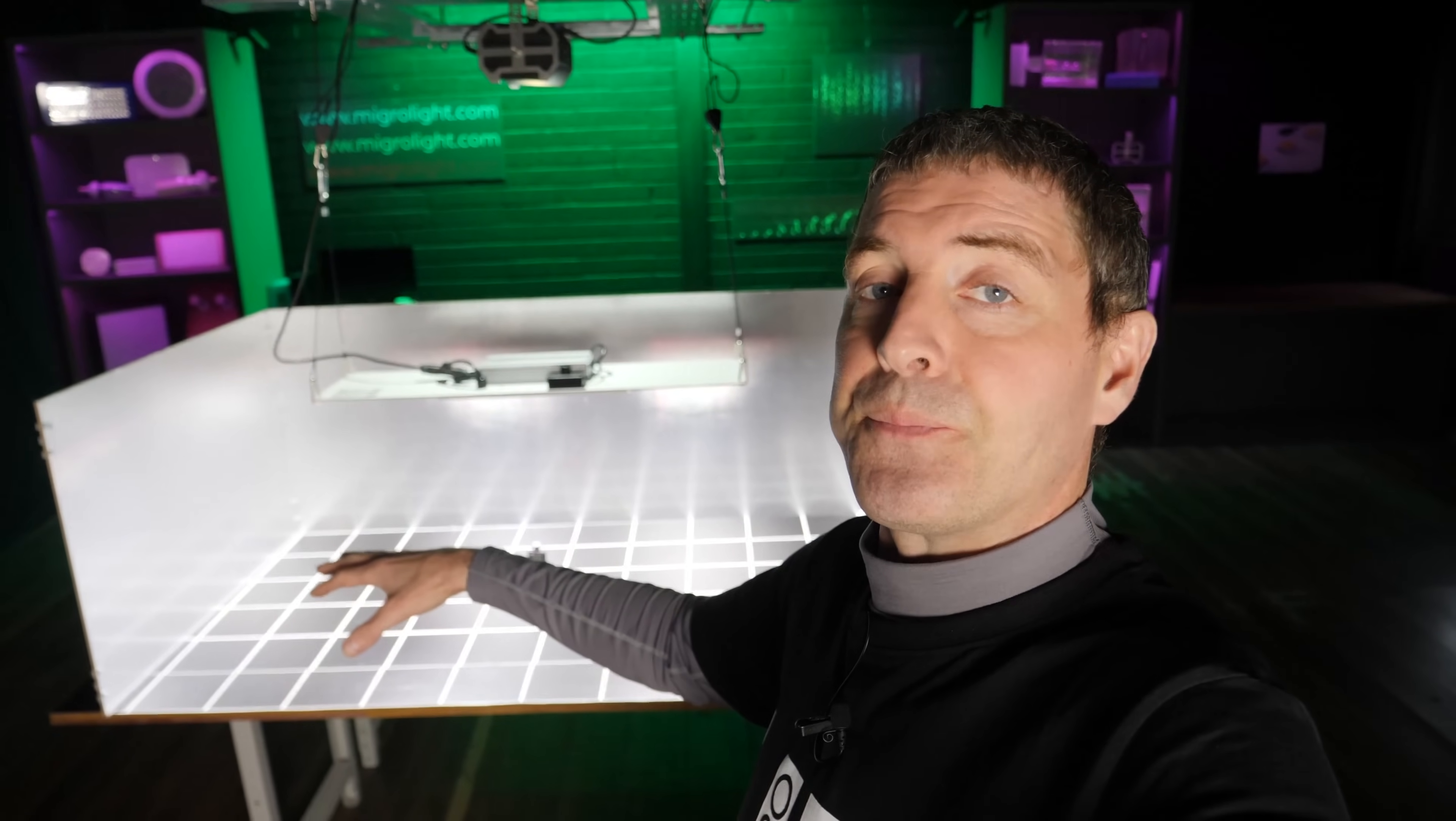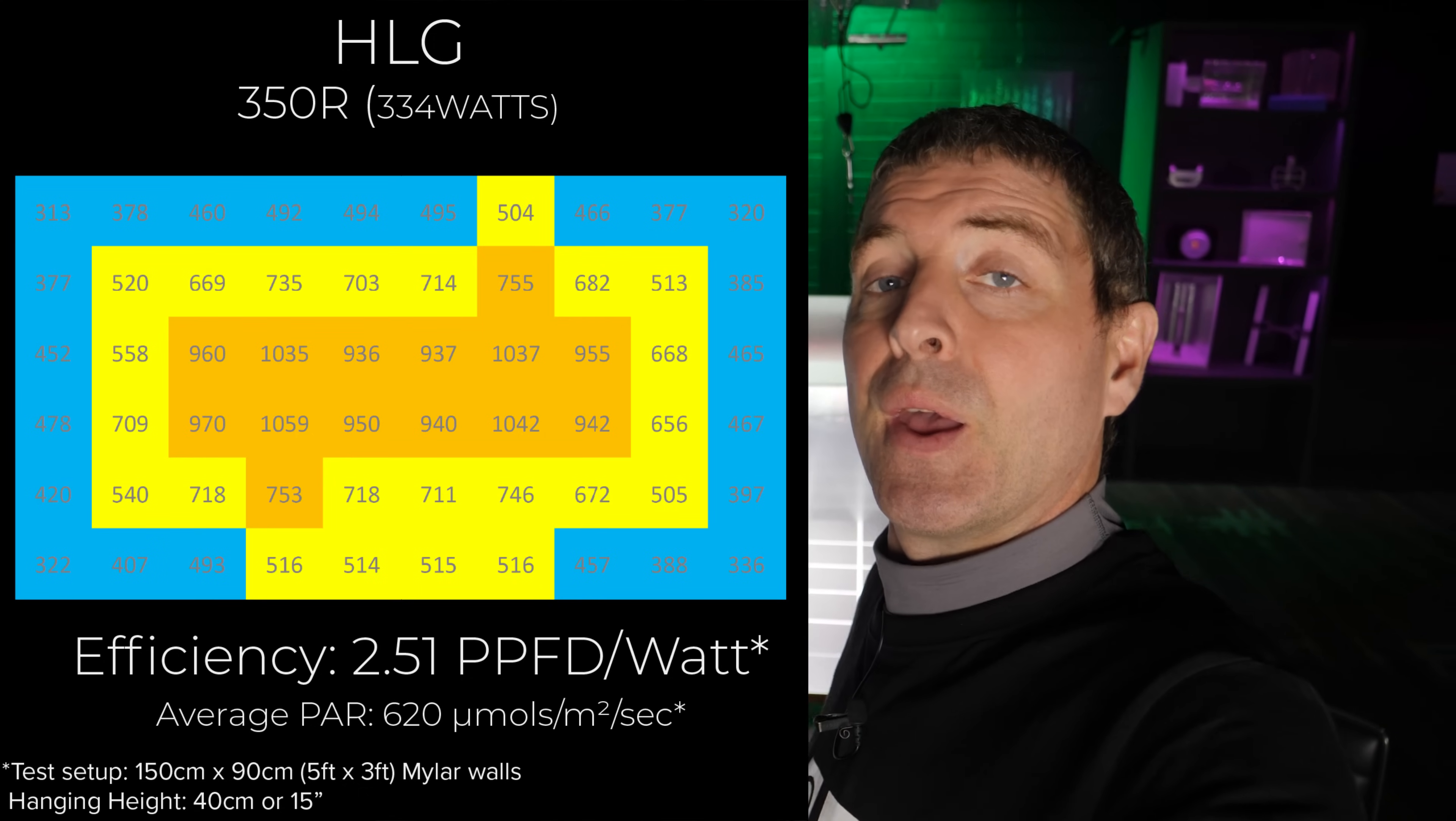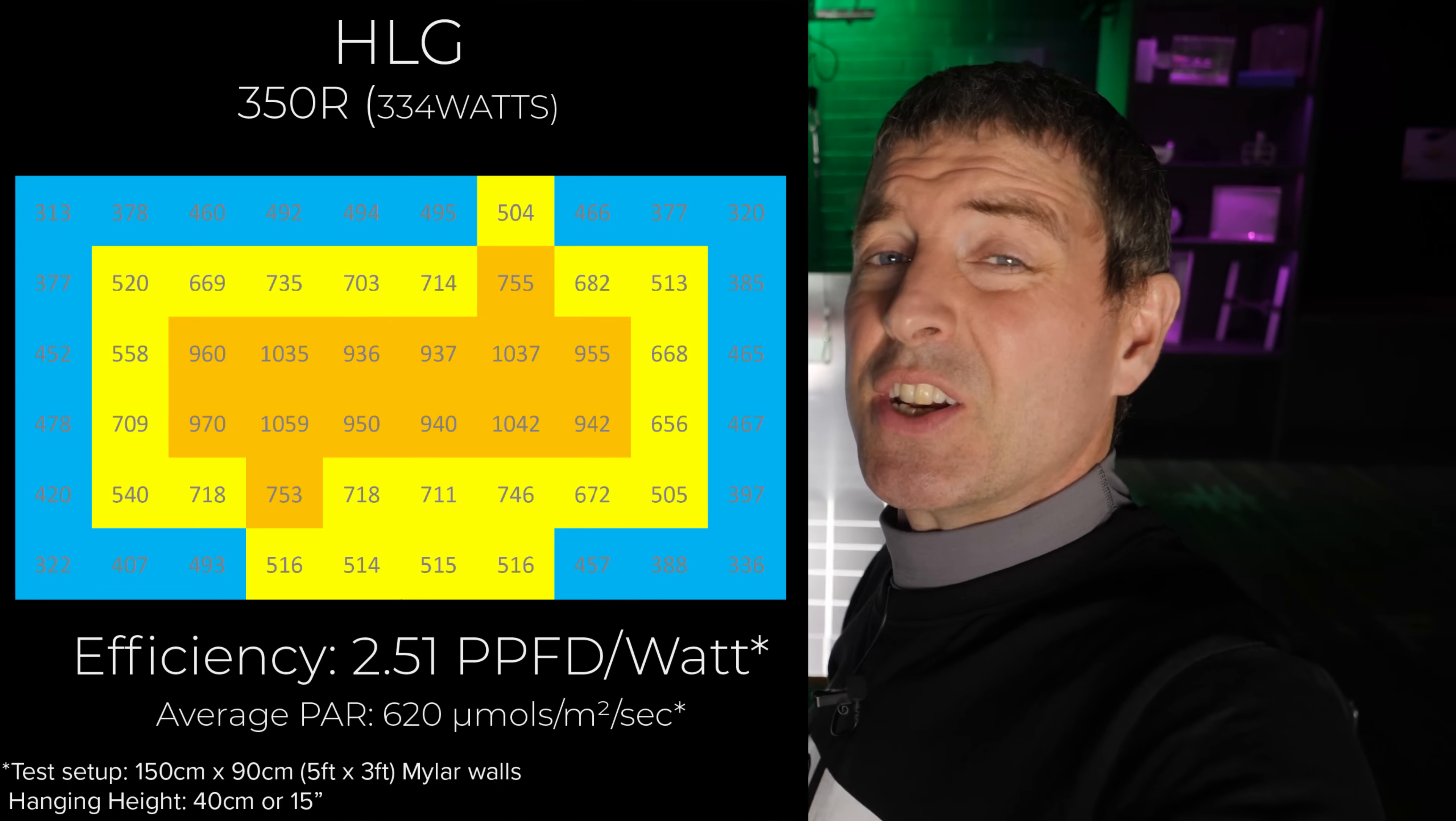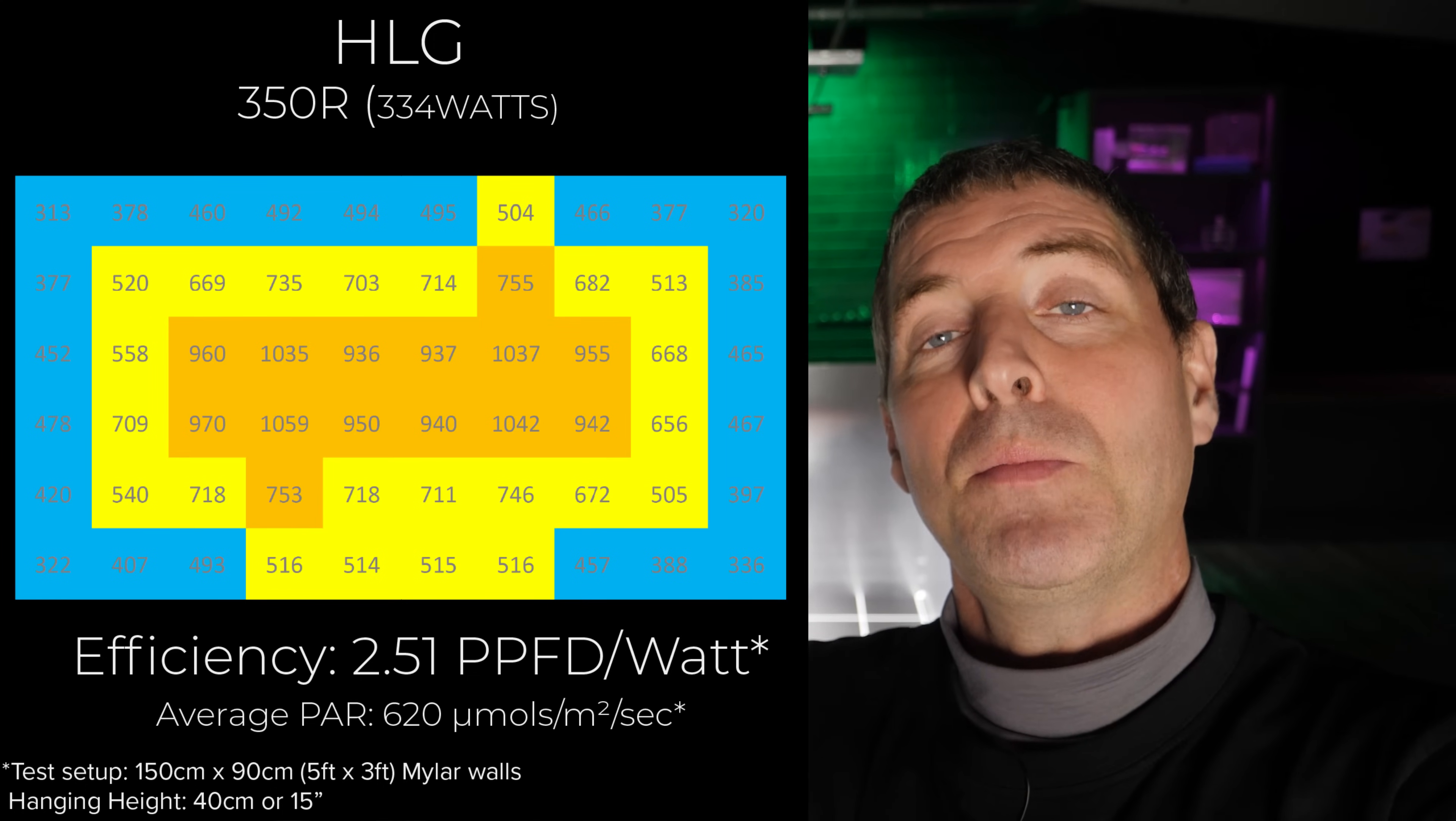I tested and recorded an average power intensity across this 5 by 3 area of about 620 micromoles per meter square per second. Multiplying that by the area gives me the total amount of power reaching that target area, and dividing it by its consumed wattage gives me the power map and the system efficiency.